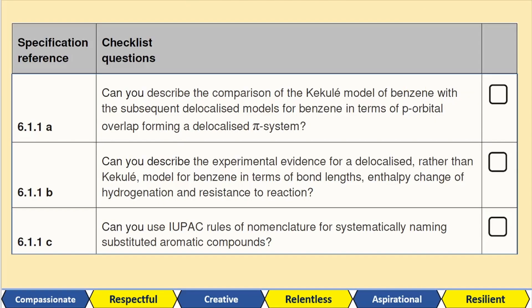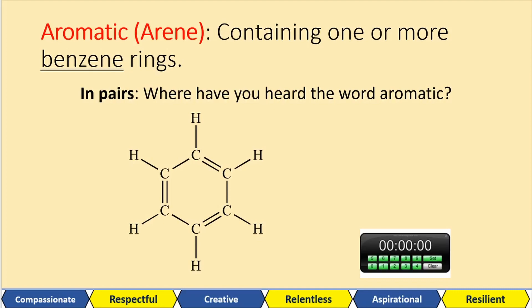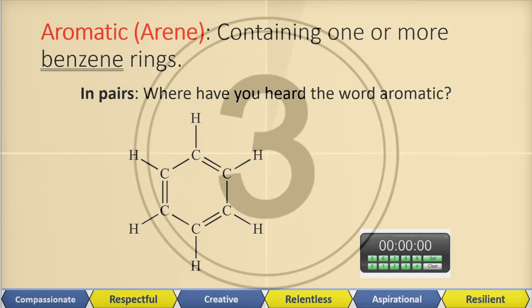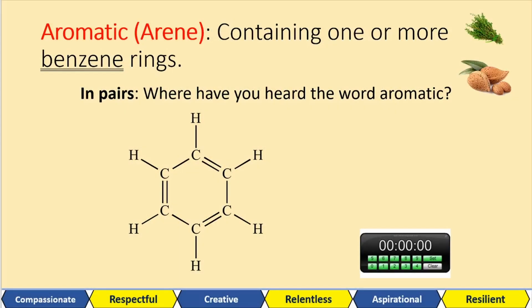We'll be going through these specification references. Aromatic compounds or arenes have one or more benzene ring. With the person next to you, or if you're working by yourself, try and think — where have you heard the word aromatic before? Well, aromatic things are aromatic — it smells. It's got to do with smell.